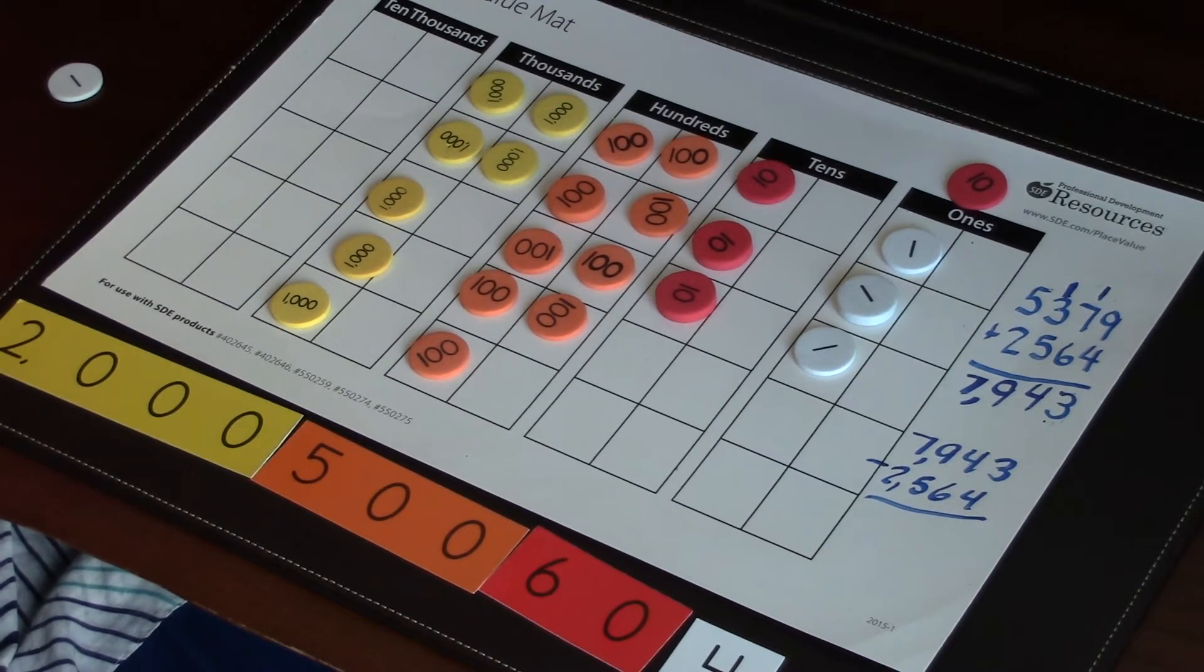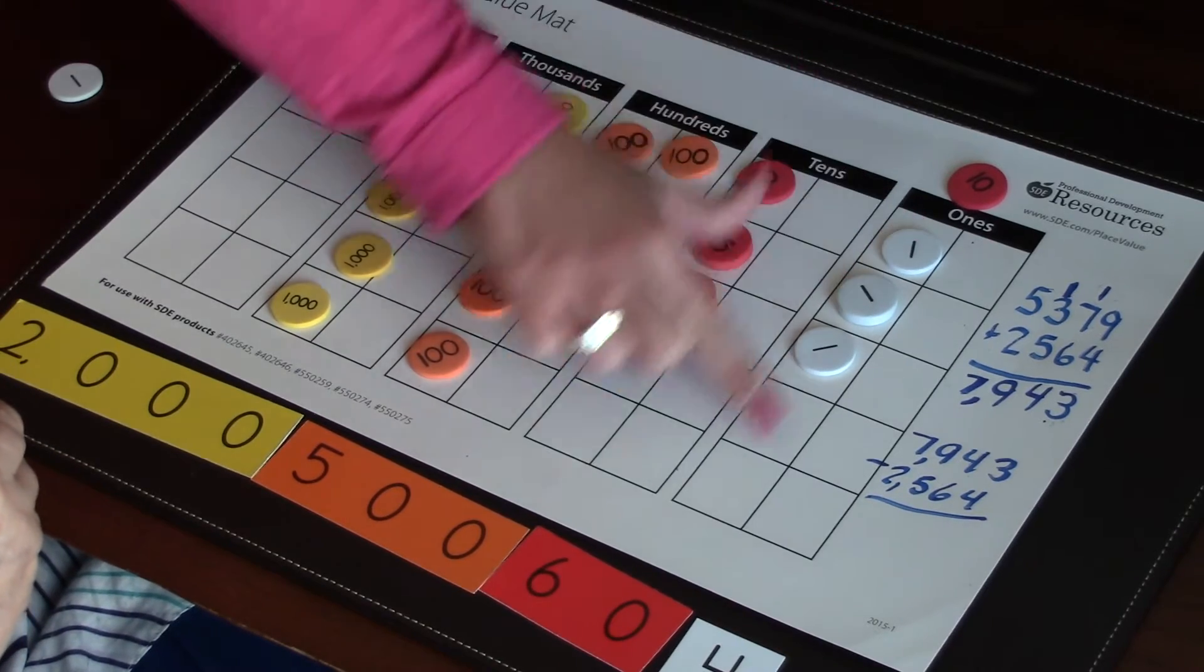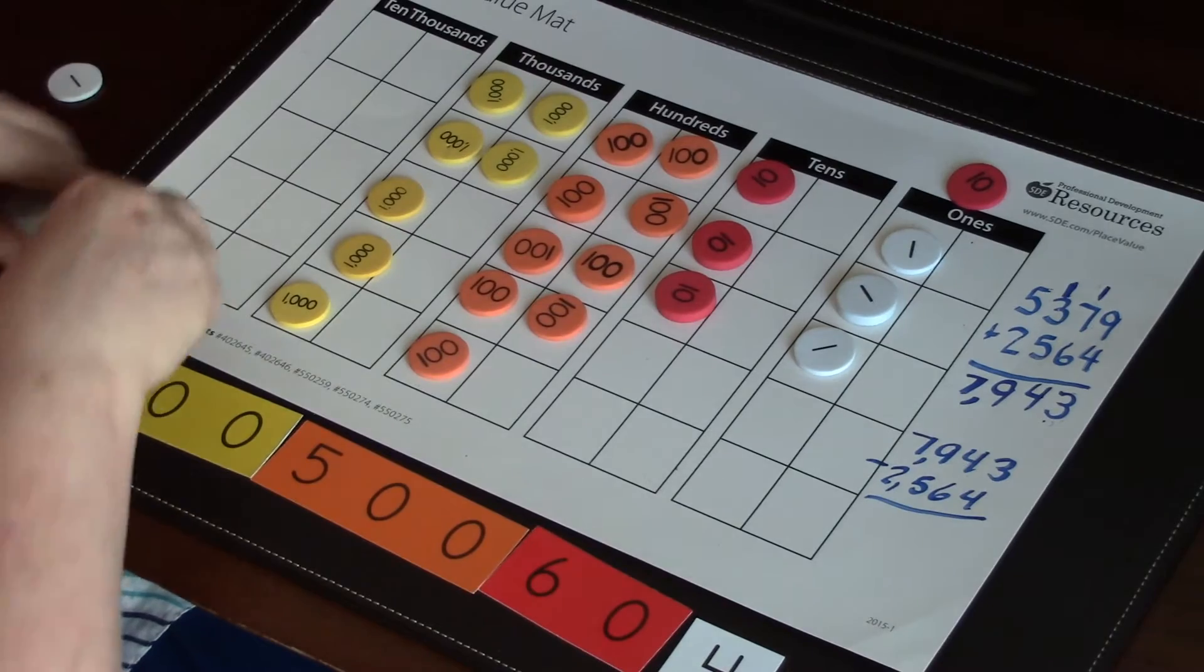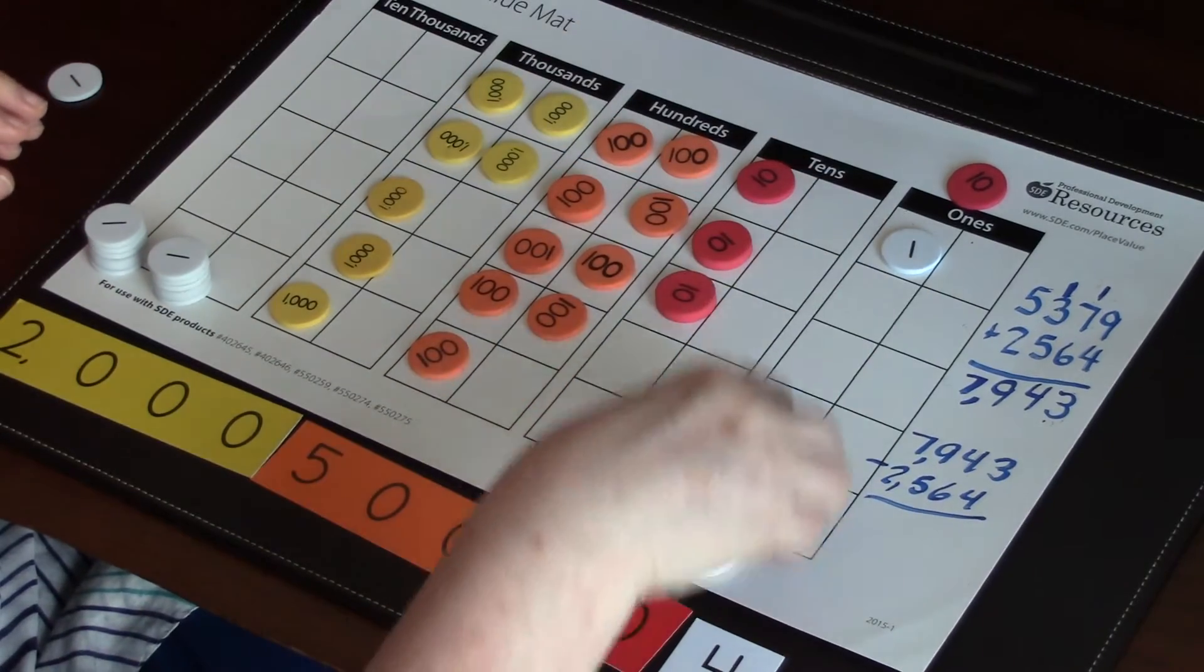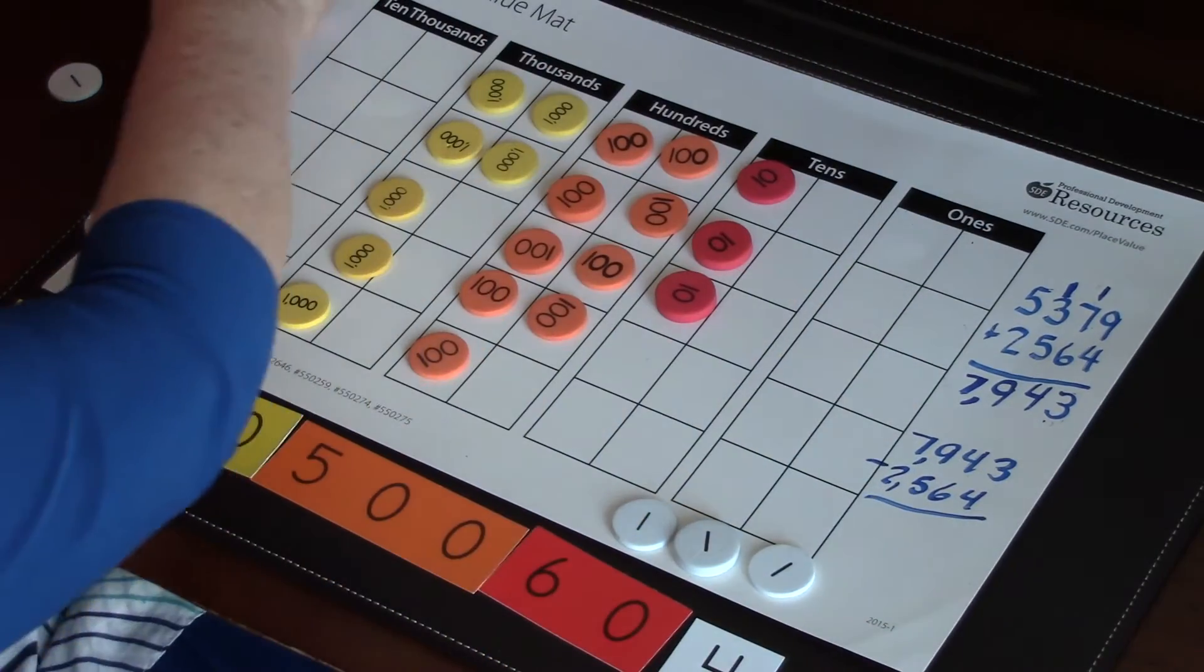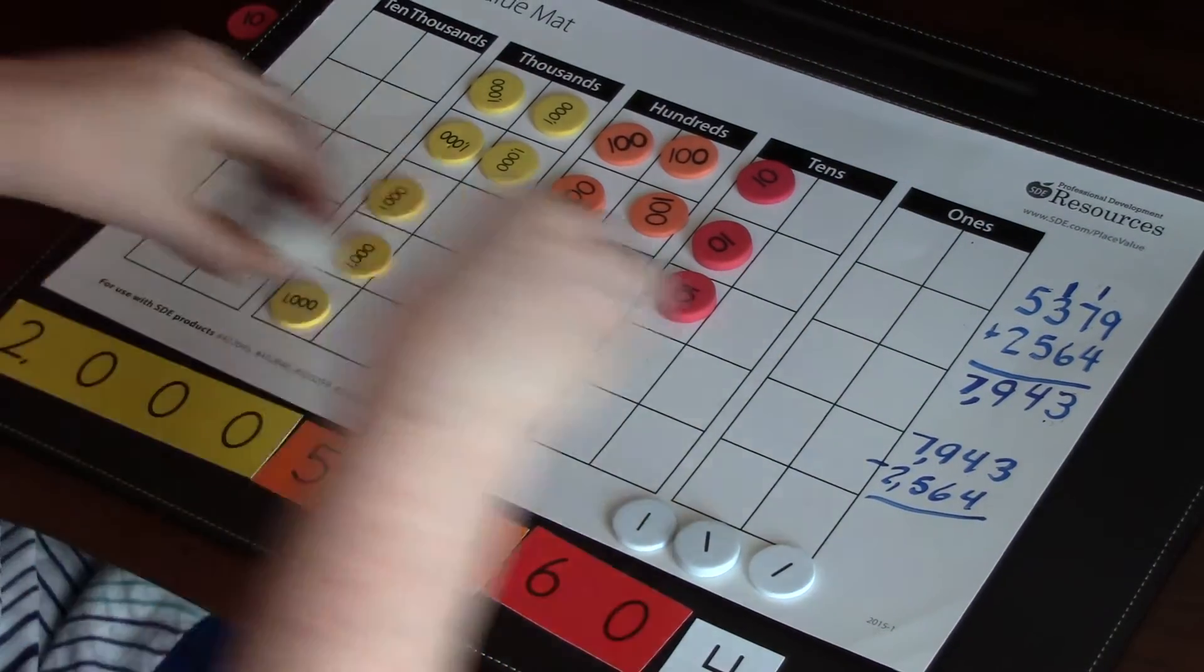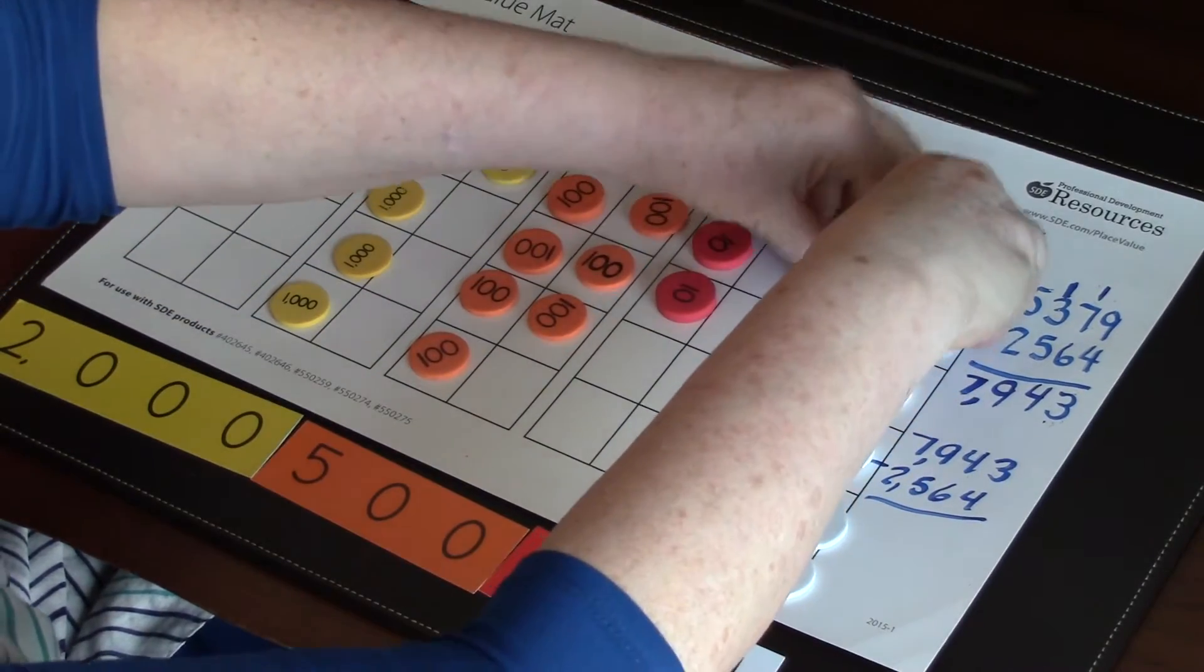But do we want to keep this 10 or what are we going to do with that 10? Well, I need to break it into ones. Right. So what I want you to do first is move these three ones down here to the bottom because what confuses students, if they leave those three ones there, a lot of them will only put seven on or they put on one more to make four.